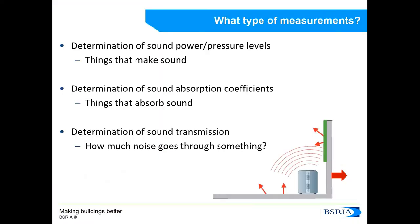There are three main types of measurements that can be carried out: the determination of sound power or sound pressure — things that make sound; the determination of sound absorption coefficients — things that absorb sound; and the determination of sound transmission — how much noise goes through something. A diagram on this slide illustrates a product producing noise, sound absorption by a wall tile, and transmission through a wall into an adjoining area.